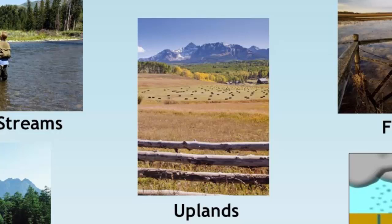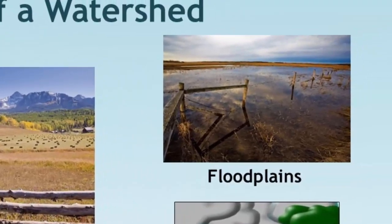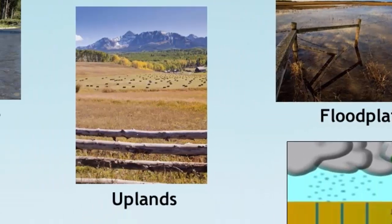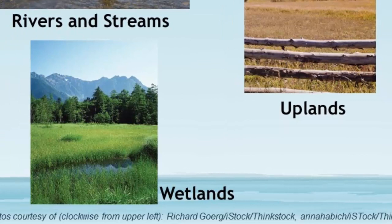Uplands are also where many human activities occur. Floodplains slow and absorb water, lessening flood impact downstream. Rich soil is deposited and aquifers are replenished. Wetlands are saturated with water for extended periods of time. They filter pollution, replenish groundwater, and provide important wildlife habitat.